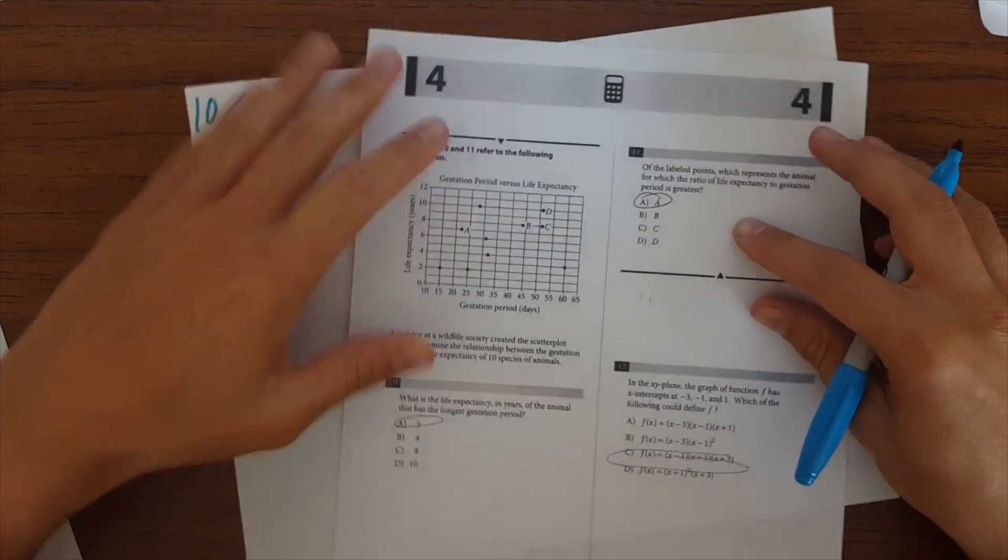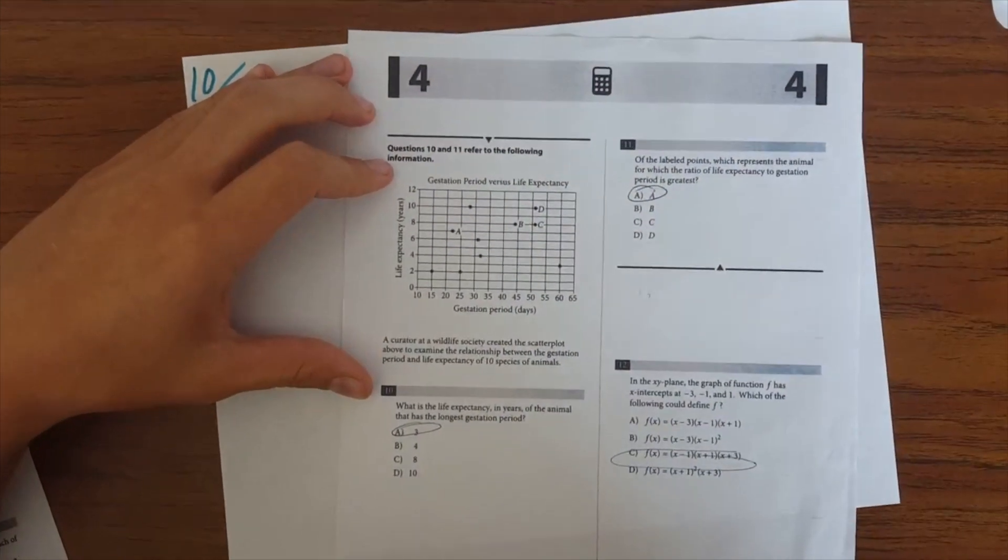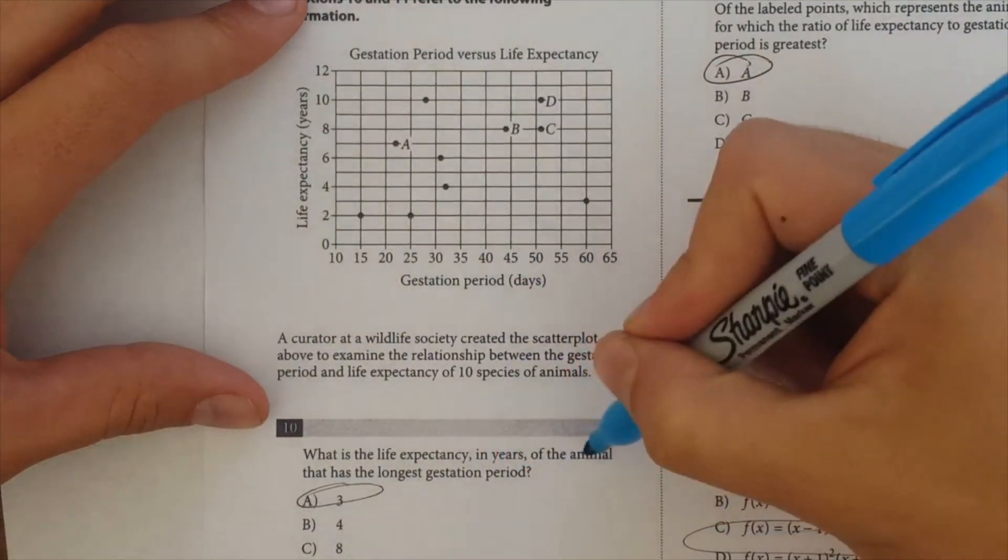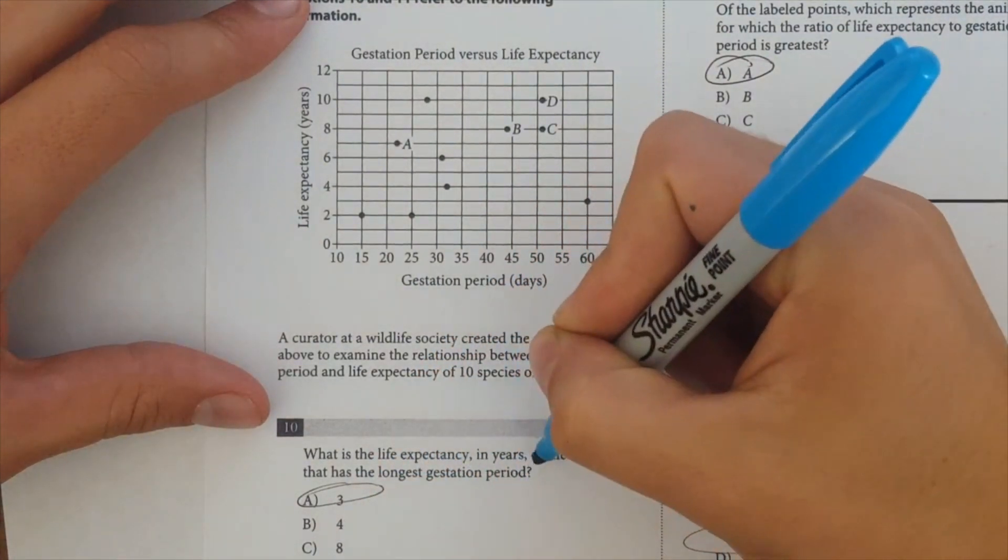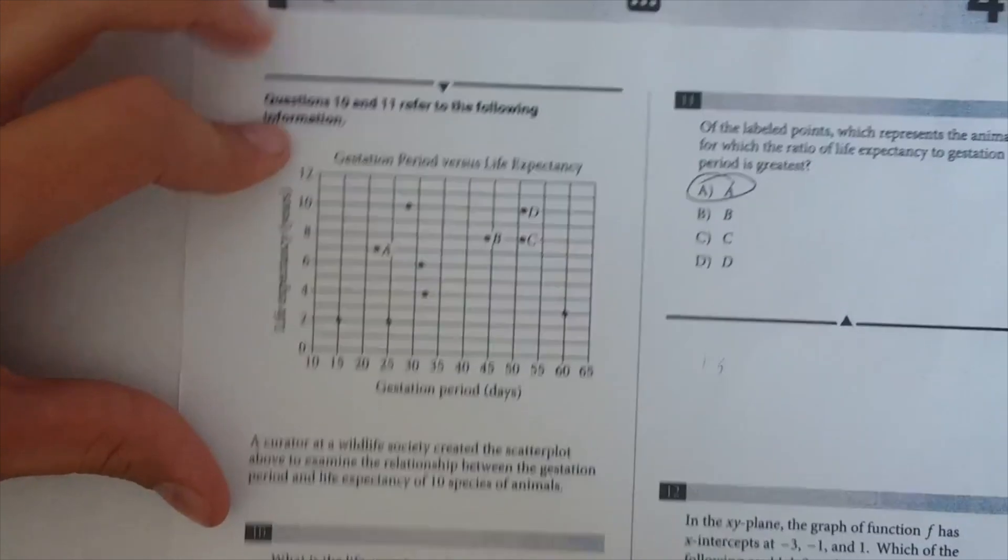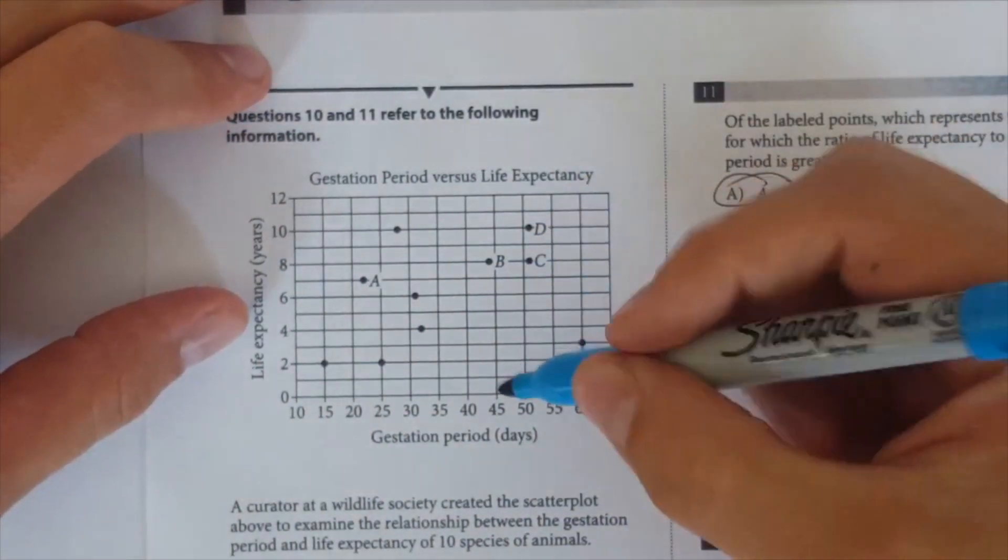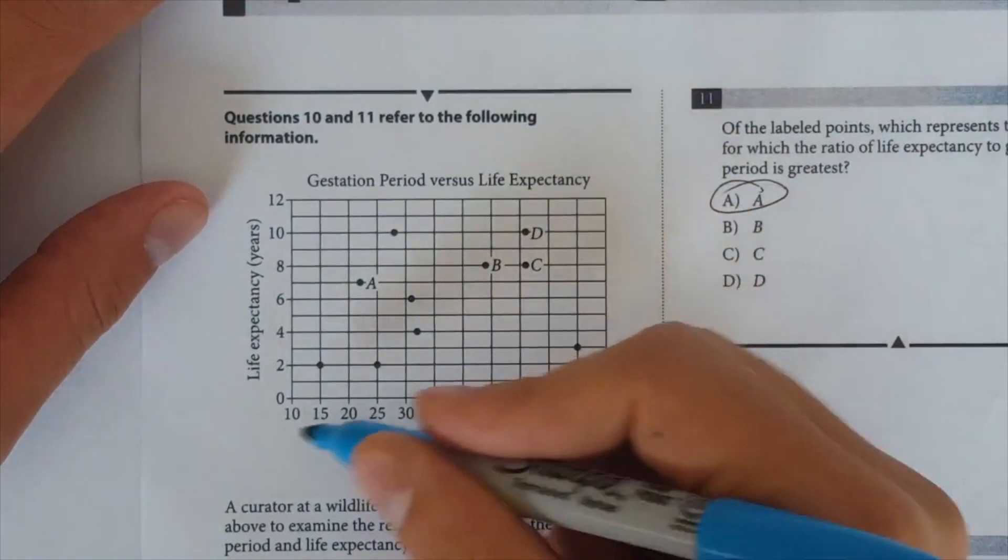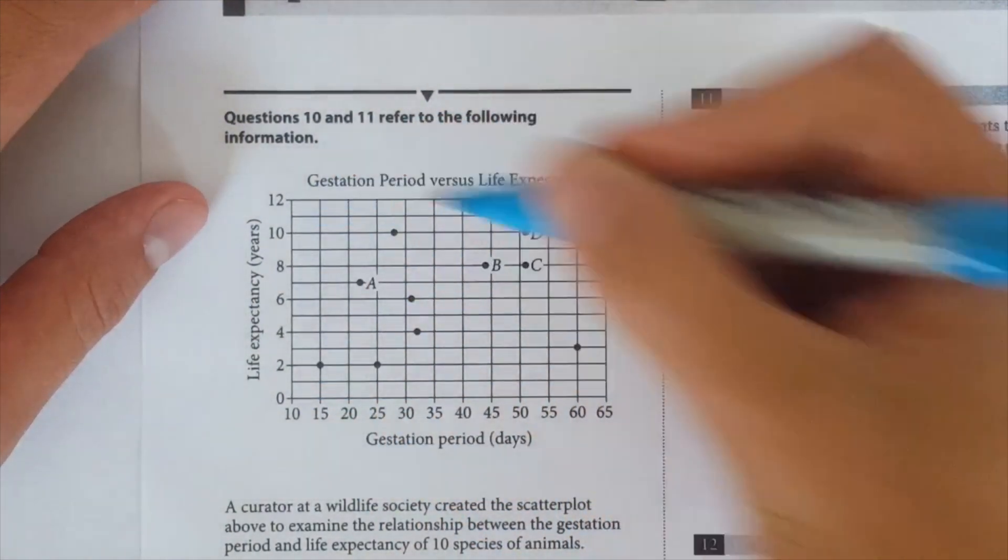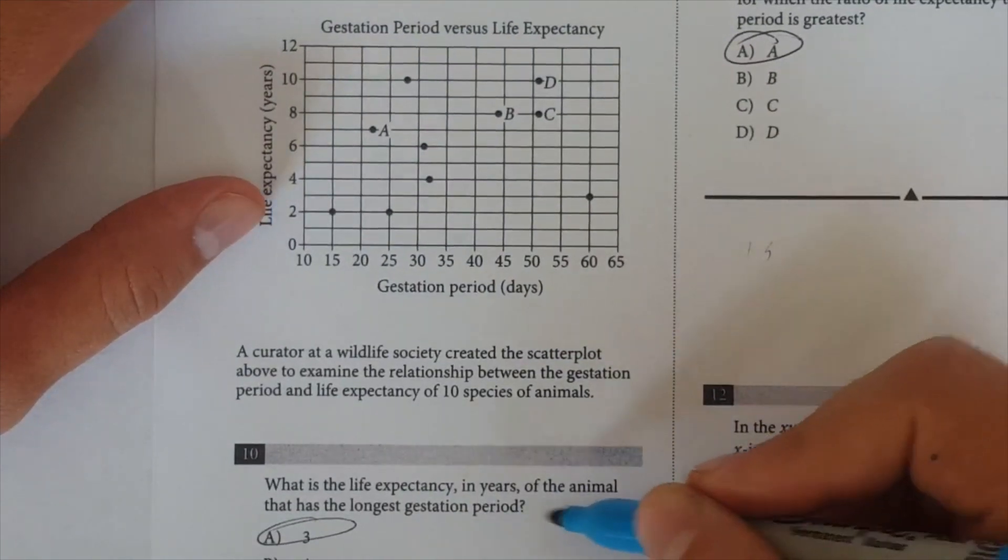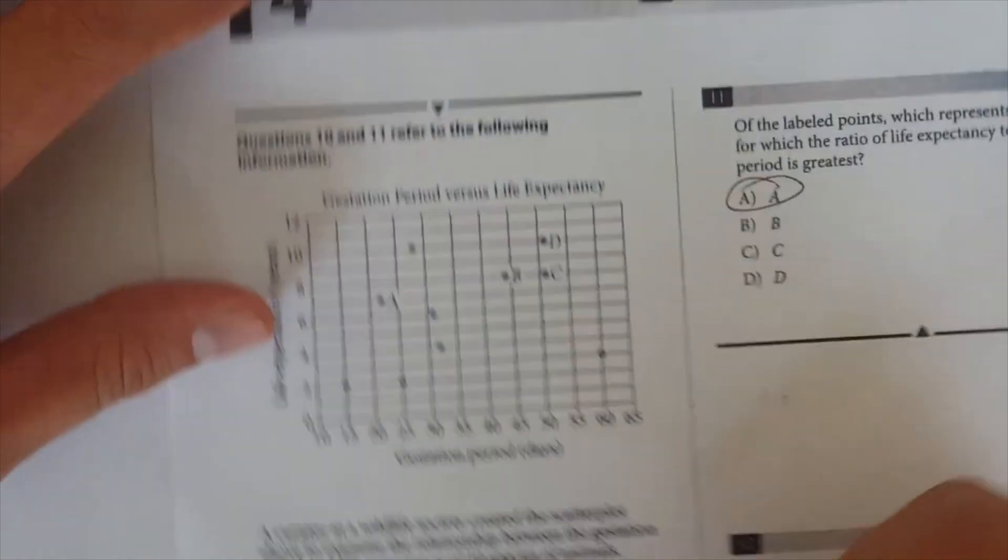Okay. So I'm going to give you, again, the plot. Maybe I shouldn't have zoomed out. I did. All right. So what is the life expectancy in years of the animal that has the longest gestation period? Now let's take a look at this plot. All right. So, it's asking, here you have gestation period and here you have life expectancy.